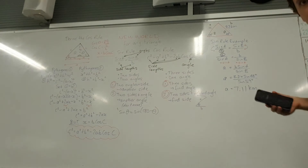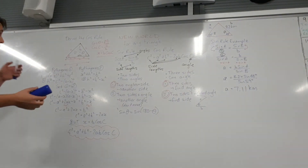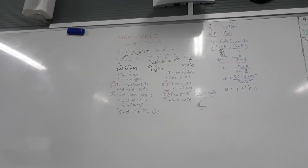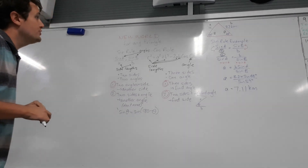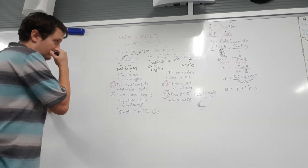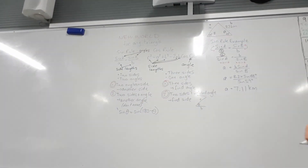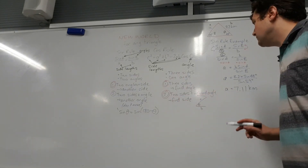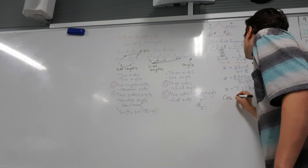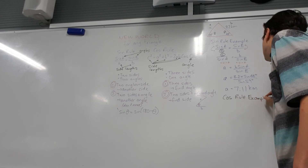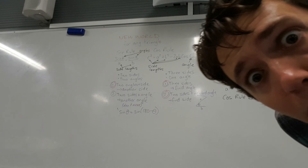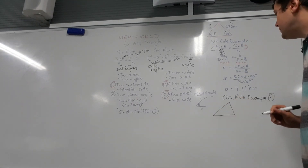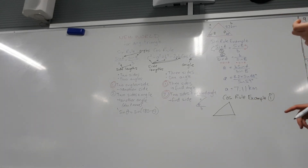That's an example of using the sine rule to find a side — two angles plus a side to find another side. Now I'm going to move on to cosine rule examples. There are two different types; I'll do both. I'll do the two sides and the included angle first. So here's a triangle for cosine rule example one.